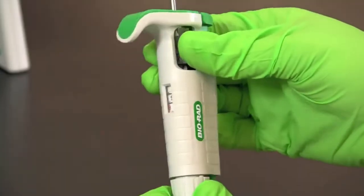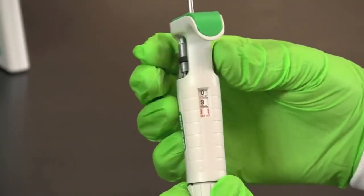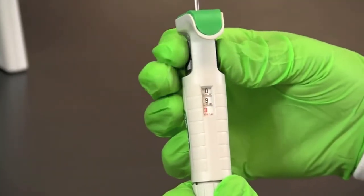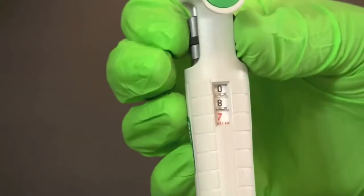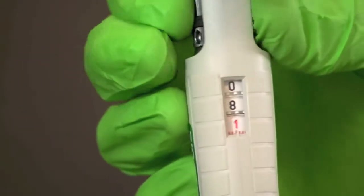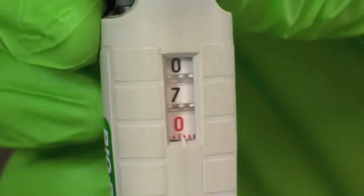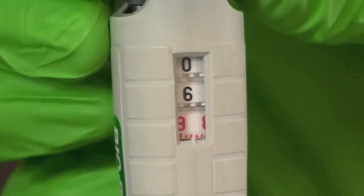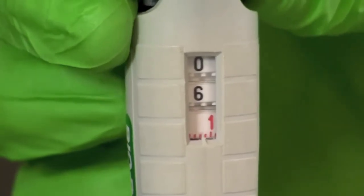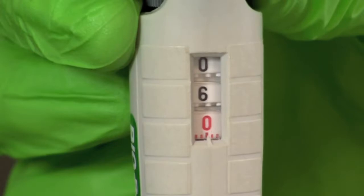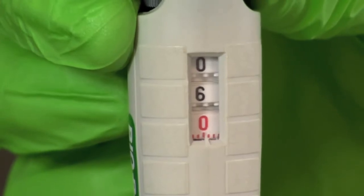Prior to putting on a tip you should first set your pipette to the desired volume. To set the volume simply turn the volume adjustment knob until the desired volume appears in the digital display window. The volume is read from top to bottom. In the case of this 2 to 20 microliter pipette the bottom digit in red indicates tenths of a microliter. Here we have displayed the correct setting for obtaining 6 microliters of sample.